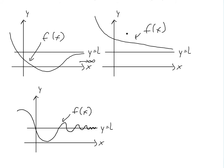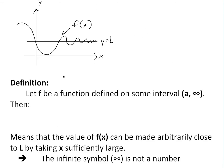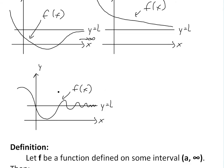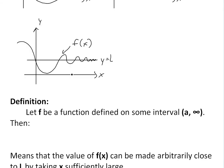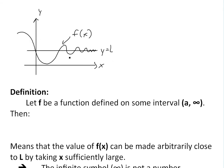So now let's get into the definition. What I just showed was a graphical illustration of the definition of horizontal asymptote and limits at infinity.